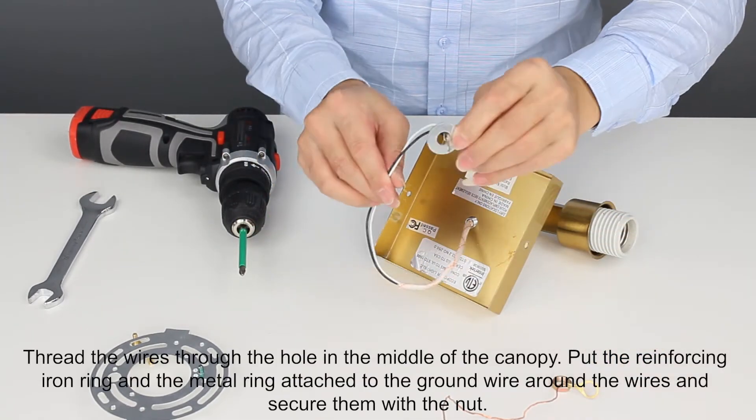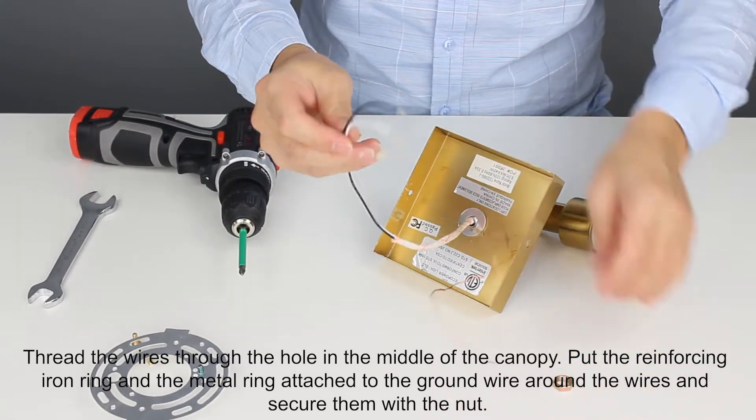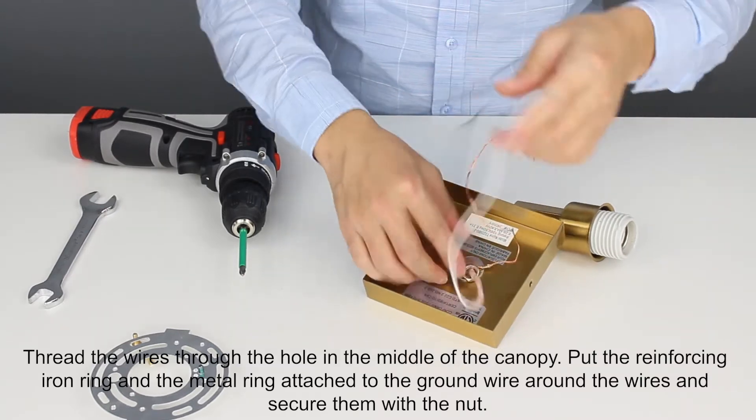Thread the wires through the hole in the middle of the canopy. Put the reinforcing iron ring and the metal ring attached to the ground wire around the wires and secure them with the nut.